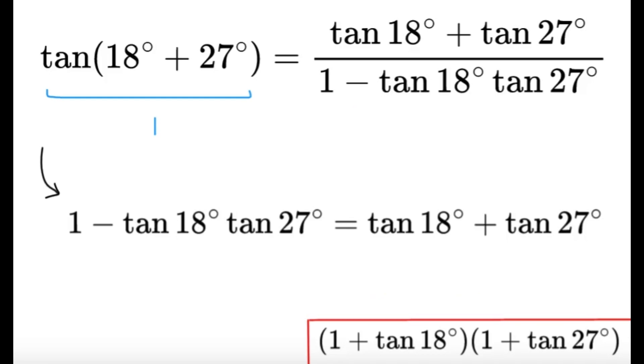So, we're going to use the tangent addition formula. So, the tangent of 18 degrees plus 27 degrees, we can expand that using the tangent addition formula: tangent A plus tangent B divided by 1 minus tangent A tangent B. And since 18 plus 27, based from our observation, that's just going to be 45 degrees.